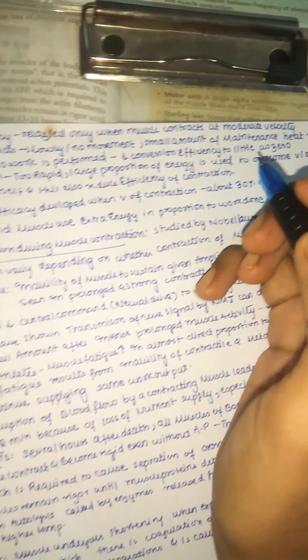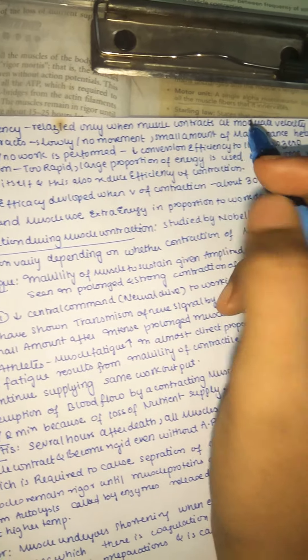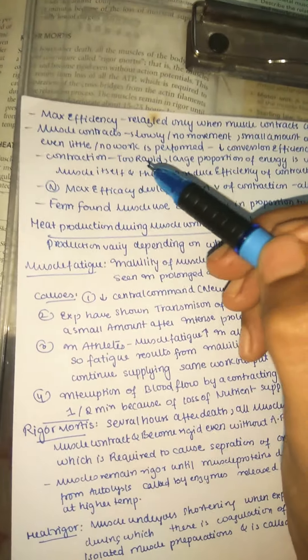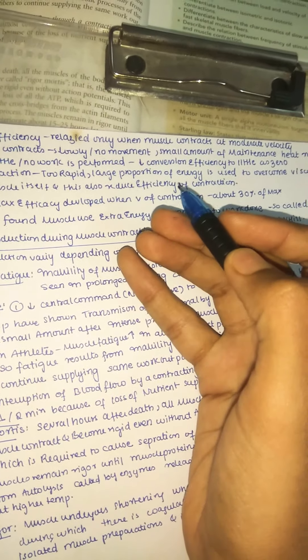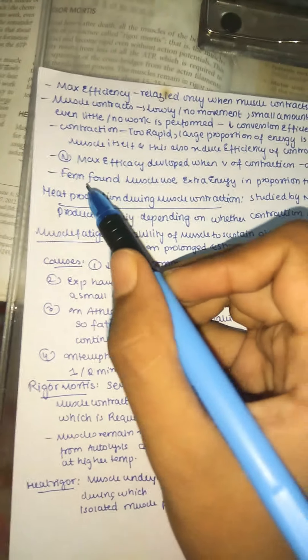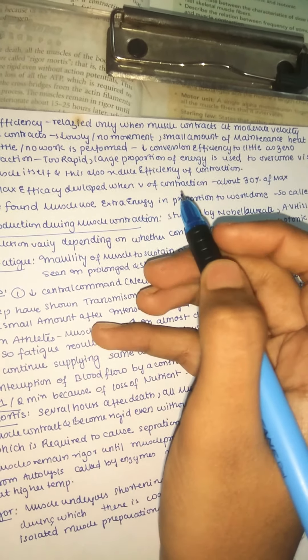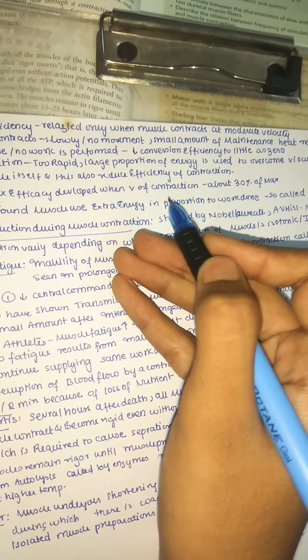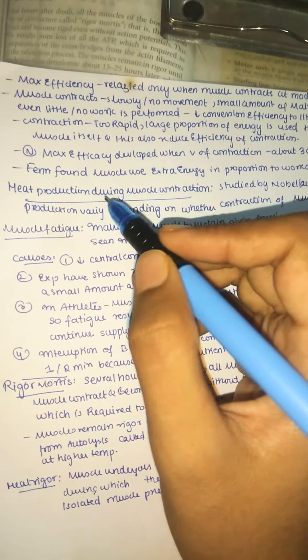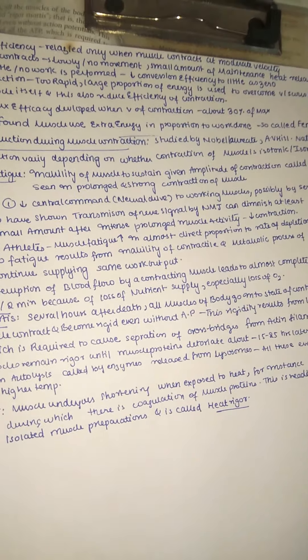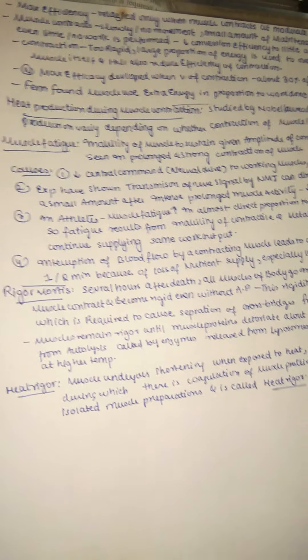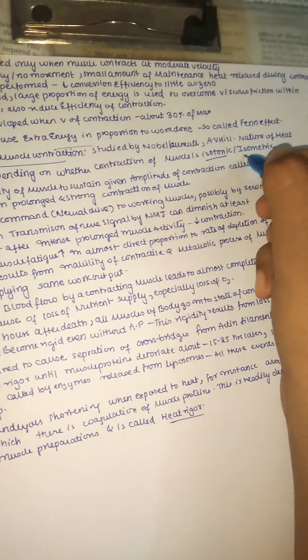Maximum efficiency is realized only when the muscle contracts at moderate velocity. If the muscle contracts too slowly or doesn't move at all, only a small amount of maintenance heat is released and efficiency approaches zero. If contraction is too rapid, a large proportion of energy is used to overcome viscous friction within the muscle itself, reducing efficiency. Normal maximum efficiency is about 30% of maximum. The Fenn effect states that muscle uses extra energy in proportion to work done.